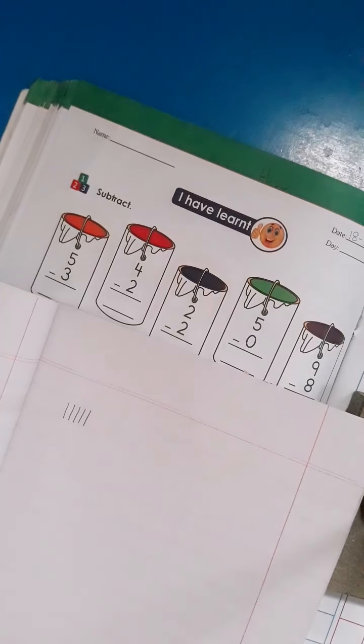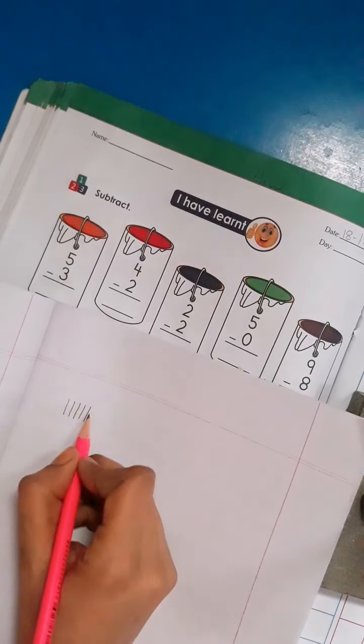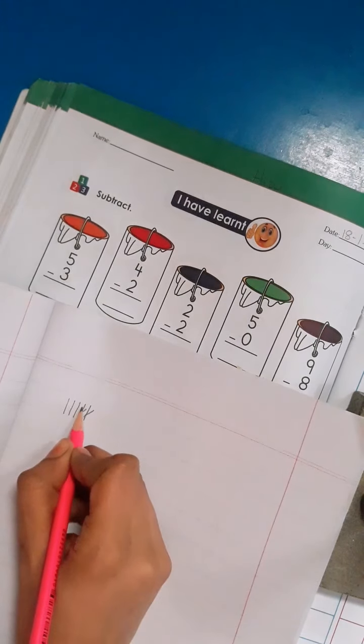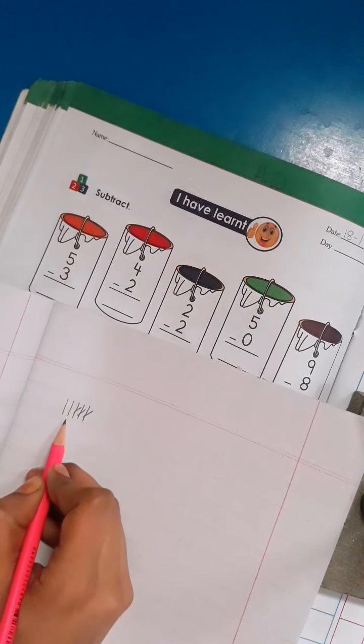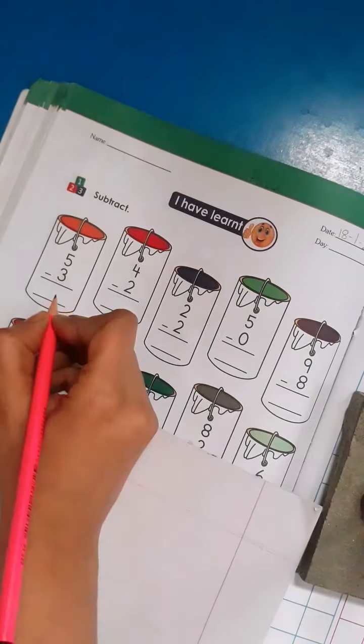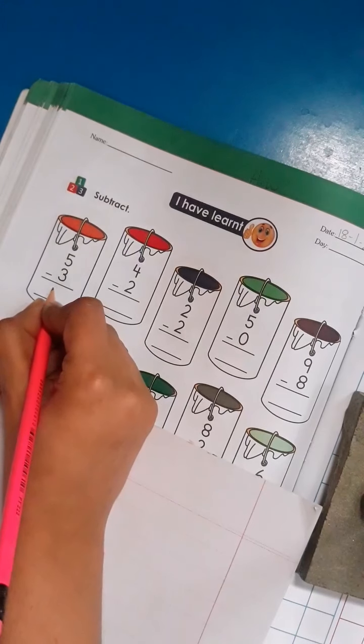I will cross 3 lines. 1, 2, 3. The rest of us have how many? 1, 2. Now I will write number 2 in box.